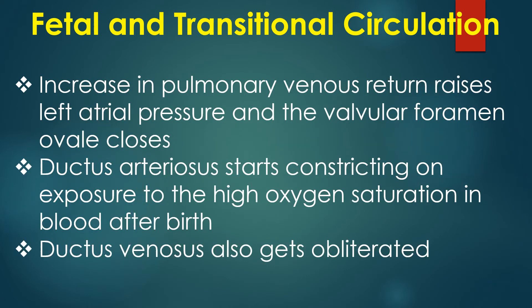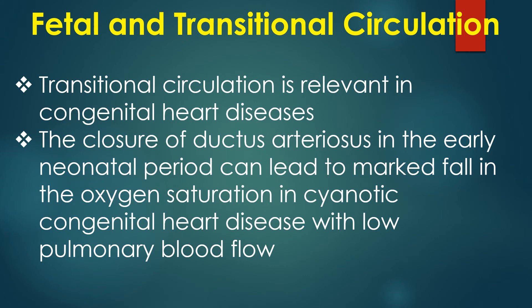Increase in pulmonary venous return raises left atrial pressure and the valvular foramen ovale closes. The ductus arteriosus starts constricting on exposure to high oxygen saturation in blood after birth. The ductus venosus also gets obliterated. Transitional circulation is relevant in congenital heart diseases.